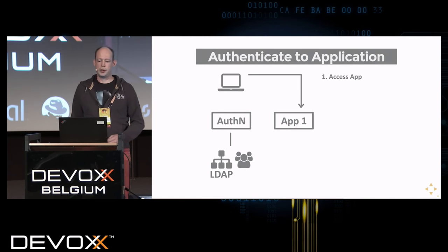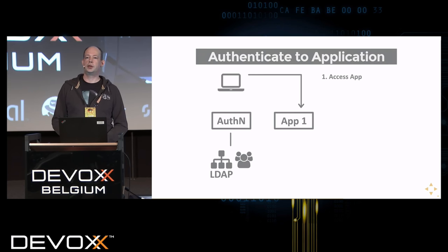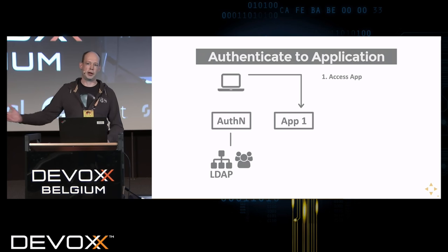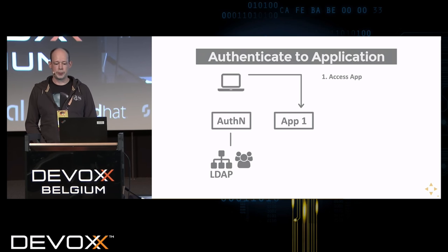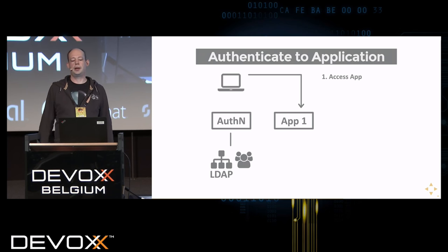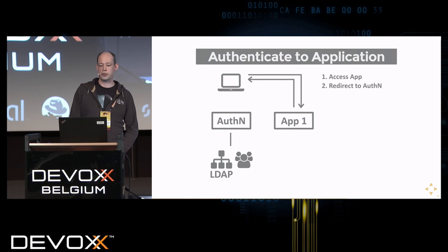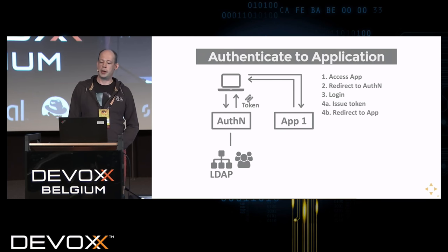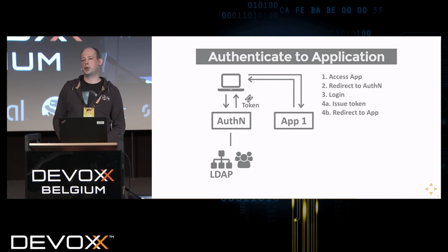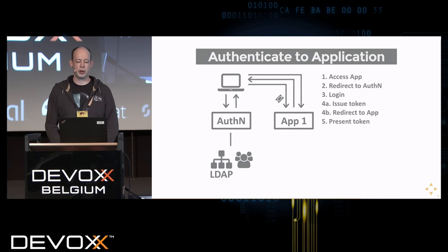The typical OpenID Connect flow: the user goes to the application first and tries to use a feature. If not authenticated, the application redirects the user to the central authentication server. The authentication server presents a login form, the user logs in with the required credentials, and a token is returned. The browser then presents the token to the application, which validates it.